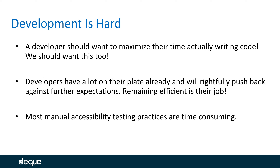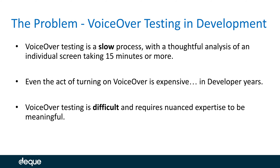Most manual accessibility testing processes are time consuming. Any manual accessibility testing process you ask a developer to do is going to distract from what they are good at — writing code. The problem is VoiceOver testing in development is very slow, with a thoughtful analysis of an individual screen taking 15 minutes or more. Even the act of turning on VoiceOver is expensive; in a process where developers want things to cost seconds, turning on VoiceOver costs minutes.